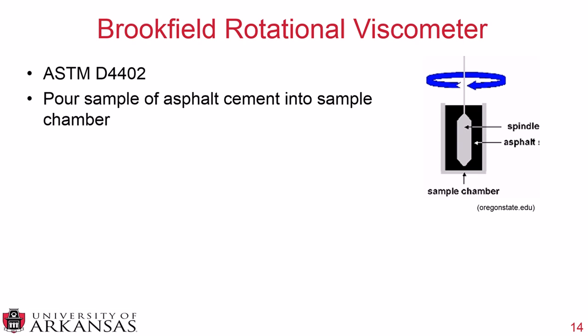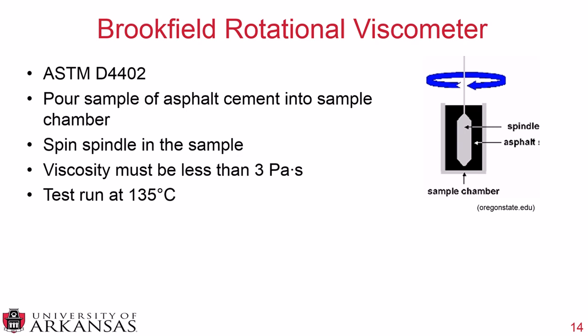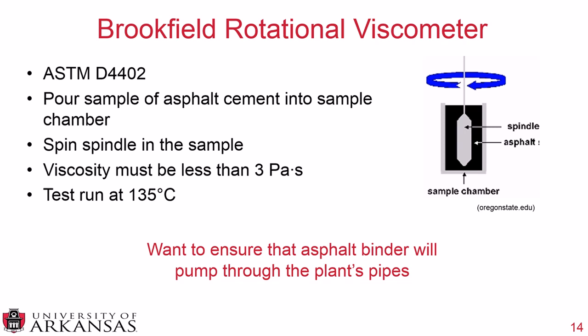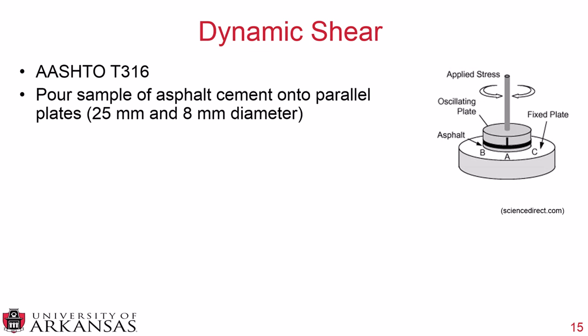The Brookfield Rotational Viscometer (ASTM D4402) pours asphalt binder into a chamber, drops a spindle into the sample, and spins it to measure viscosity. Run at 135°C, the viscosity must be less than 3 Pascal seconds. This ensures the asphalt binder will pump through the plant's pipes and addresses workability and pumpability.